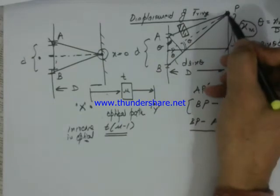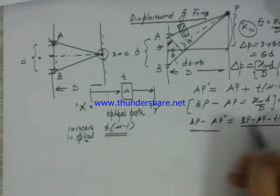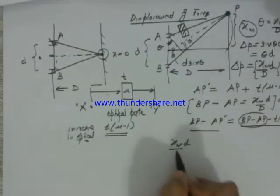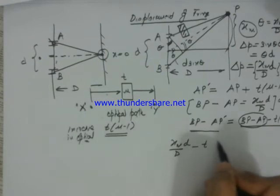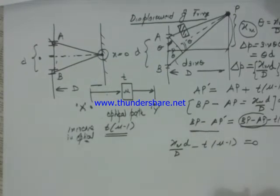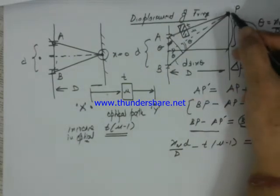Now let this path difference be zero to have a central fringe at this new point P. So BP minus AP, we know, is xmd upon d minus t into mu minus 1 is equal to zero.